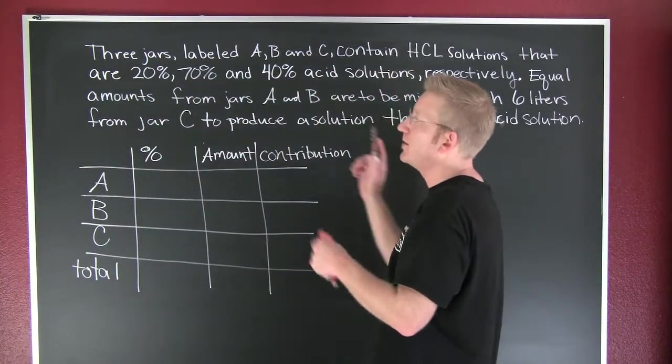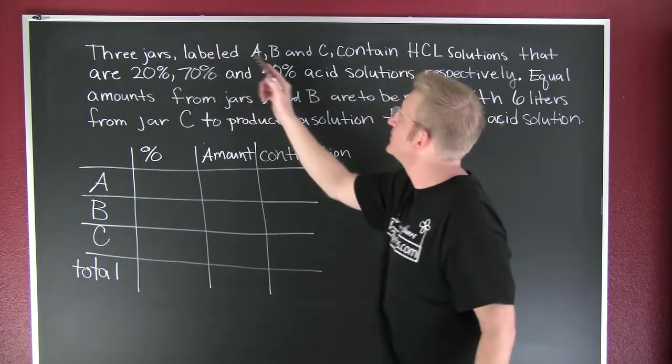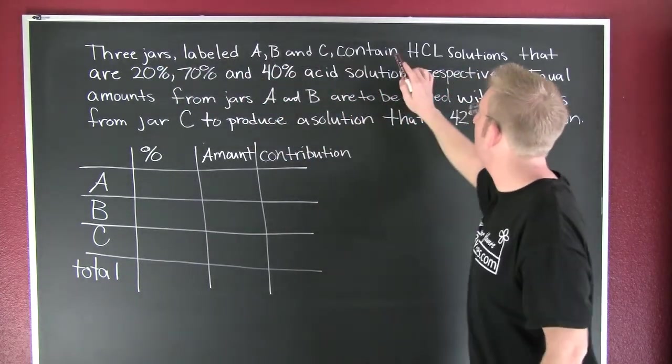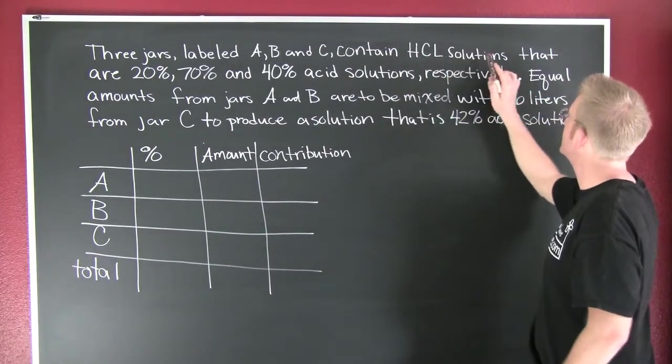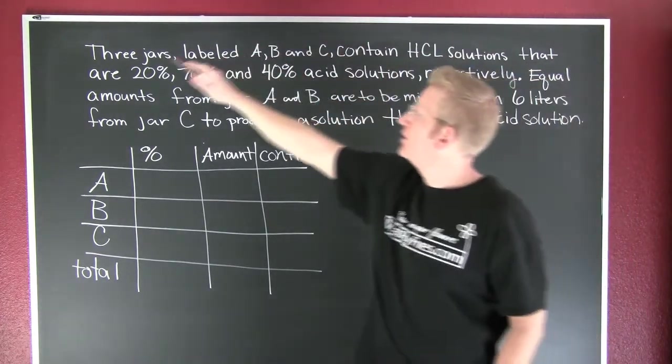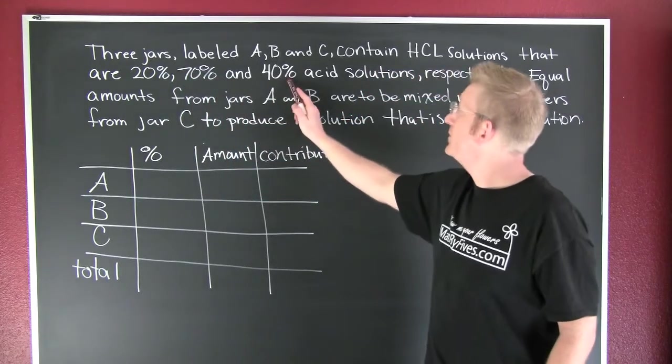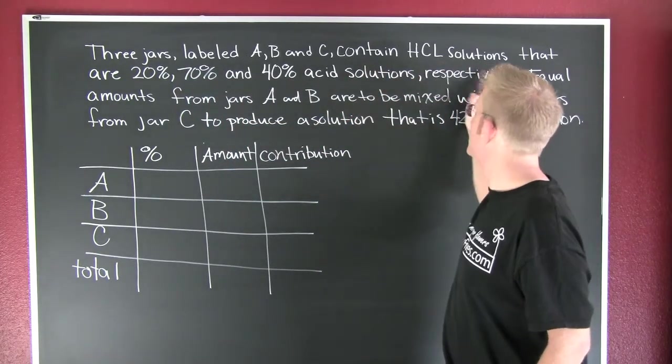Here we're presented with a problem where we have three jars labeled A, B, and C. They all contain hydrochloric acid solutions that are 20%, 70%, and 40% acid solutions respectively.